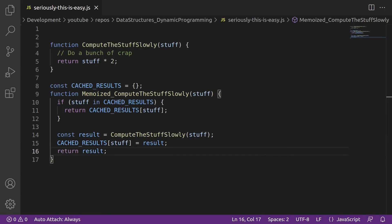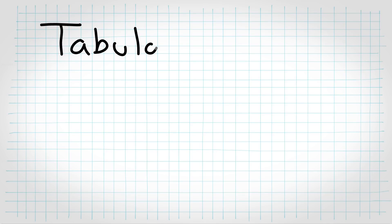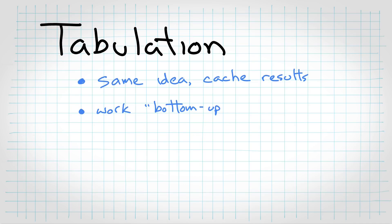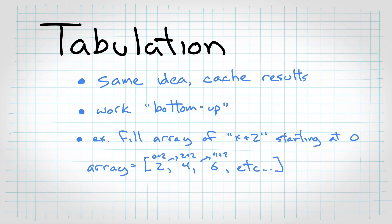Then you might have heard the term tabulation mentioned in the same breath. And that's generally the same idea, except that with recursive solutions, you tend to work top-down. And with iterative, you tend to work bottom-up, working towards a solution by building up from smaller solutions, typically by filling out a table. So, tabulation is basically just filling out an array or a table or whatever with answers ahead of time.